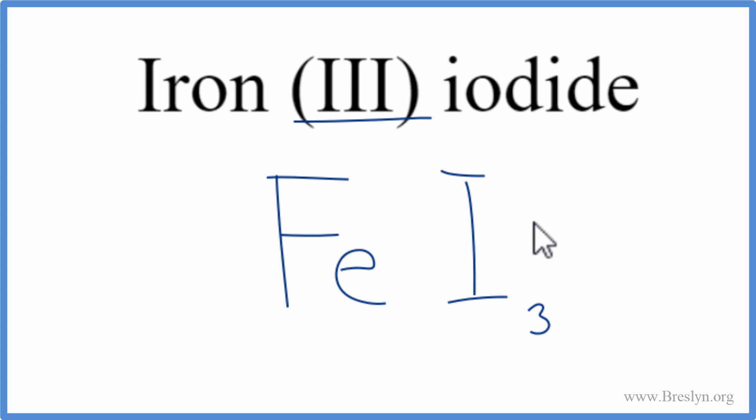And that's it. That's the formula for iron 3 iodide. Let's check our work and make sure we got that right. Iron, because of the Roman numerals, we said was 3 plus. And we looked the iodide up, that's 1 minus.